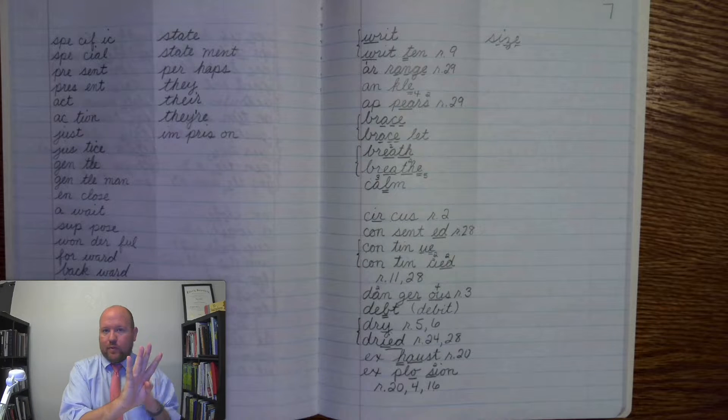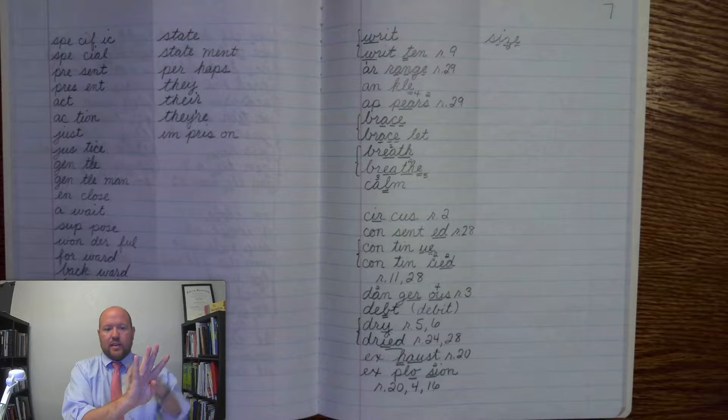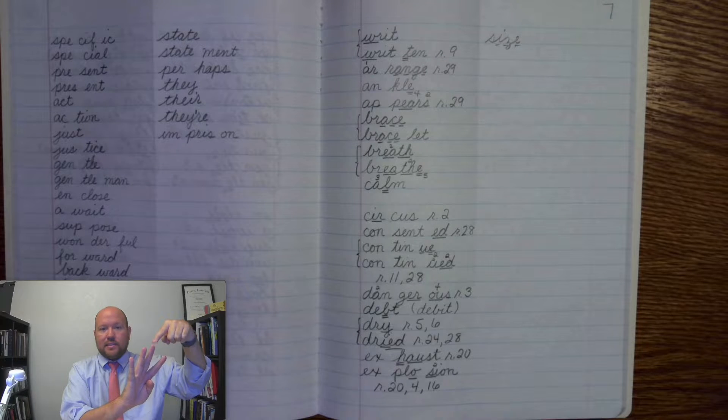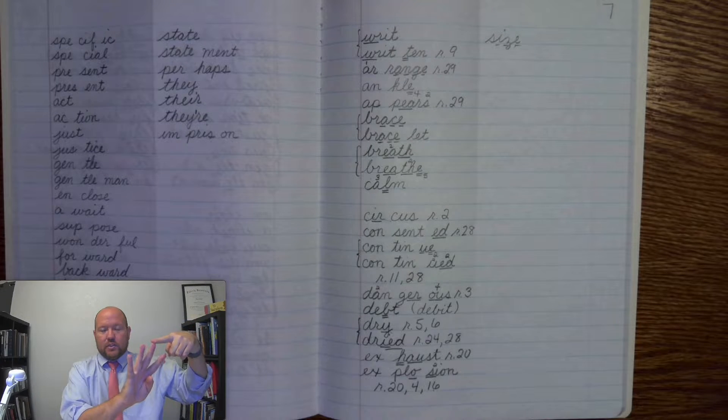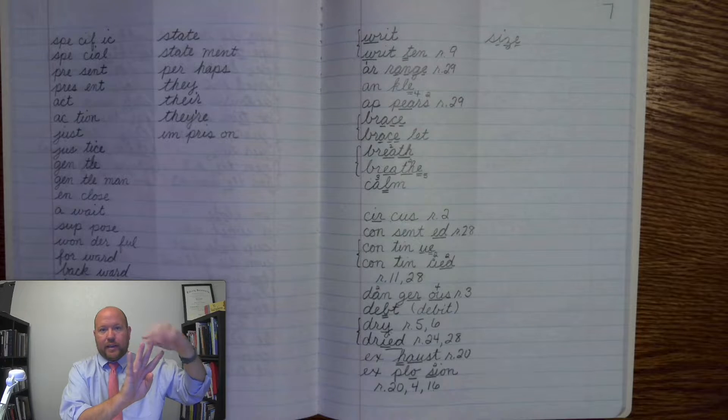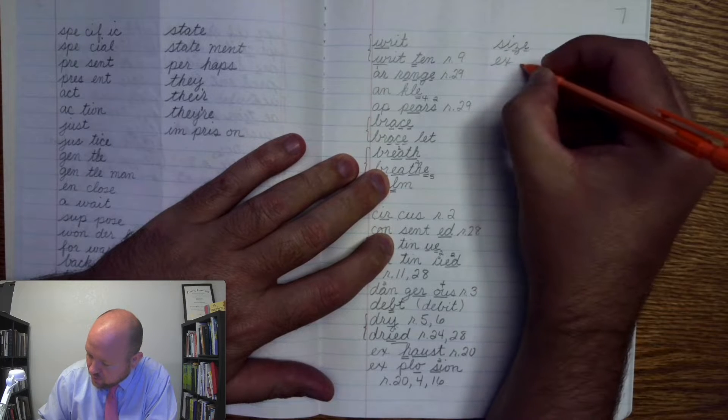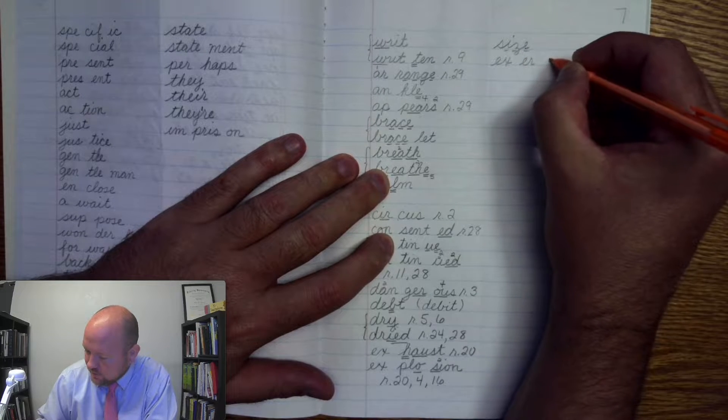And it's completely different from the word size. Here, we're using a C to make the S sound, and we're using an S to make the Z sound. So realize that exercise is completely different from the word size. Let's write it. X-R-size.